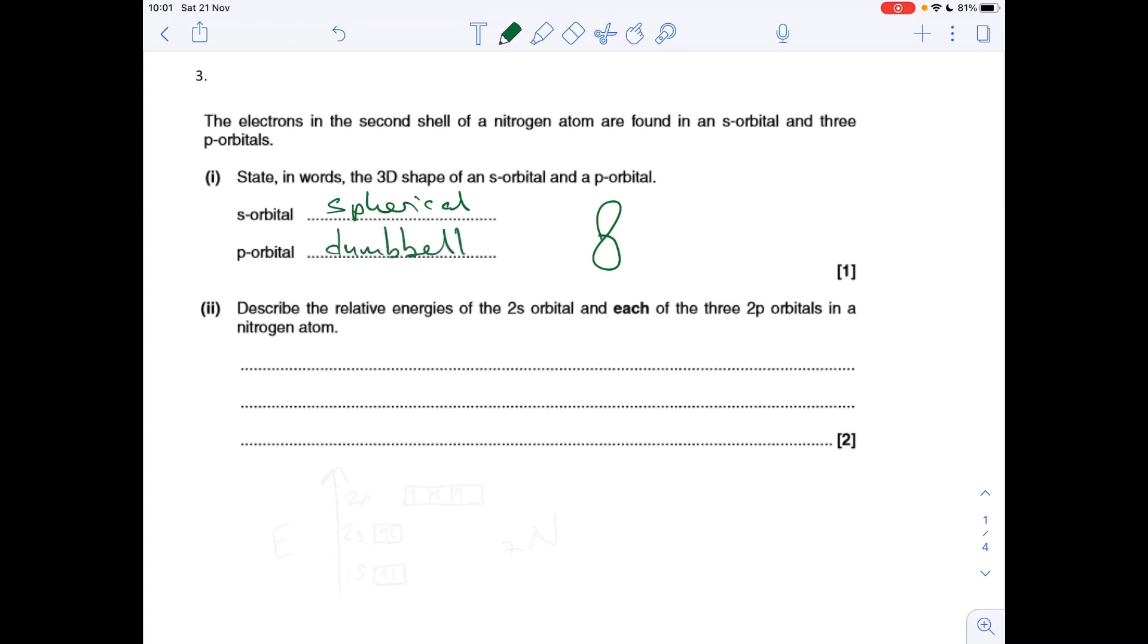Next part of question two: you can see I've already drawn up the electron configuration in the electrons in boxes format for nitrogen. The good thing about that is you've got the energy ladder, so you can see how the subshell energies compare with each other.